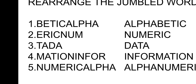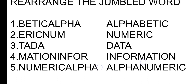Data is what we give as instruction to the computer, what we type is data. Now the fourth one: 'mation in for' — no meaning. Bring 'I-N-F-O-R' to the front, and the word becomes 'information.'